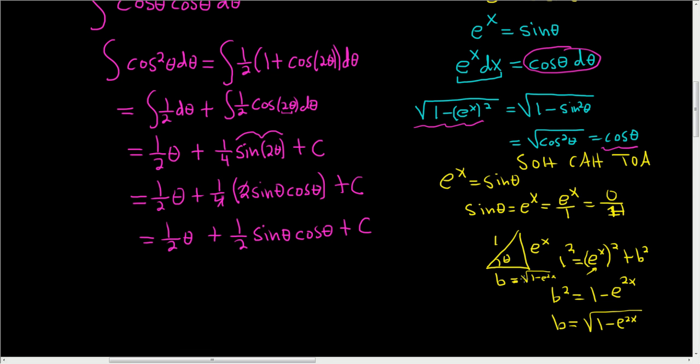So this is equal to 1 half. Now, what is theta? Let's see. If the sine function takes theta to e to the x, then the arc sine function takes e to the x back to theta. All right, it's the inverse sine. They undo each other. Again, if the sine function takes theta and gives you e to the x, the arc sine function takes e to the x and gives you back theta. So theta is simply the arc sine of e to the x.